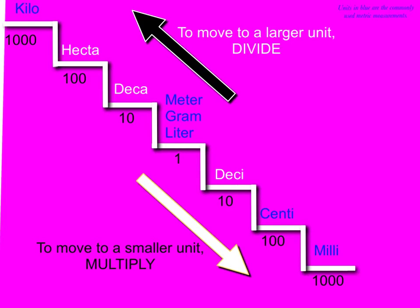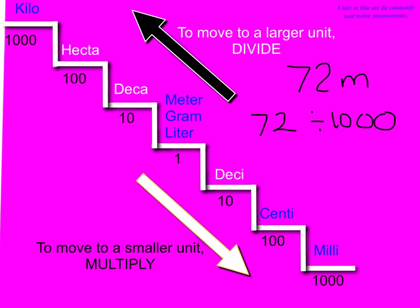This time, let's say we want to go to a larger unit. Let's say we have 72 meters and we want to know how many kilometers that is. We would need to divide by a thousand, so you would need to do 72 divided by a thousand. Seventy-two divided by a thousand is .072. We move the decimal three places. It is seventy-two thousandths of a kilometer.